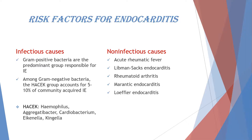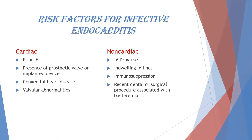From an infectious standpoint, gram-positive bacteria are the predominant group responsible for the disease. Among gram-negative bacteria, the HACEK group accounts for about 5–10% of community-acquired infectious endocarditis. Cardiac risk factors include prior infective endocarditis, presence of a prosthetic valve or implanted device, congenital heart diseases, and valvular abnormalities. Non-cardiac causes include IV drug abuse, indwelling IV lines, immunosuppression, and recent dental or surgical procedures associated with bacteremia.